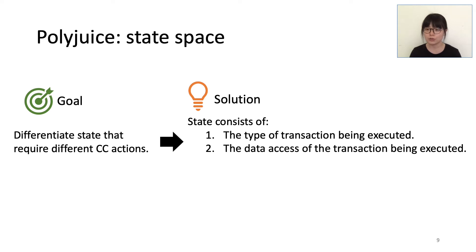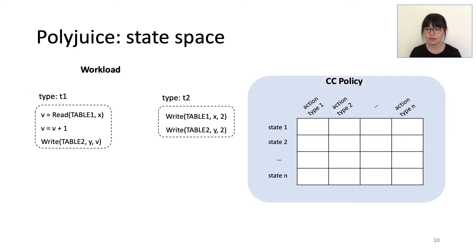What should constitute an execution state? Our goal is to differentiate states that require different concurrency control actions. In Polyjuice, the state consists of two parts: the type of transaction being executed, and the data access location of the transaction. Suppose the workload consists of two types of transactions, T1 and T2, and each type has two static code locations at which data accesses are made. We label each access location with an integer identifier.